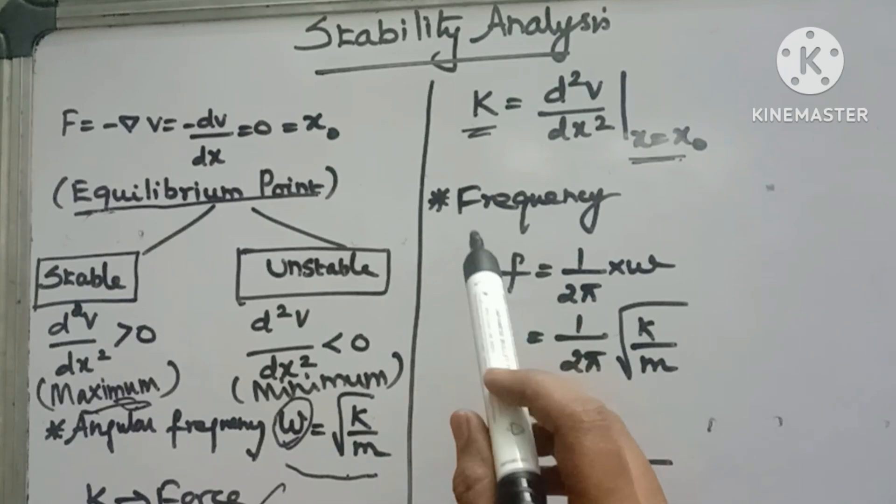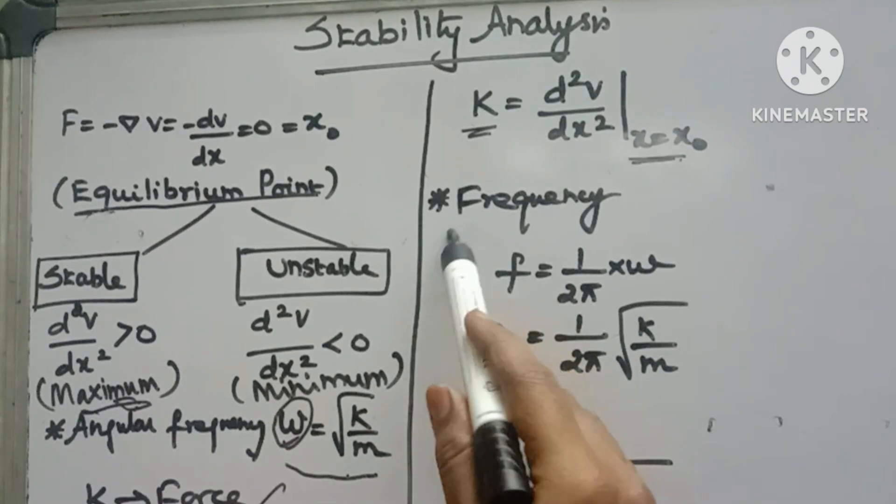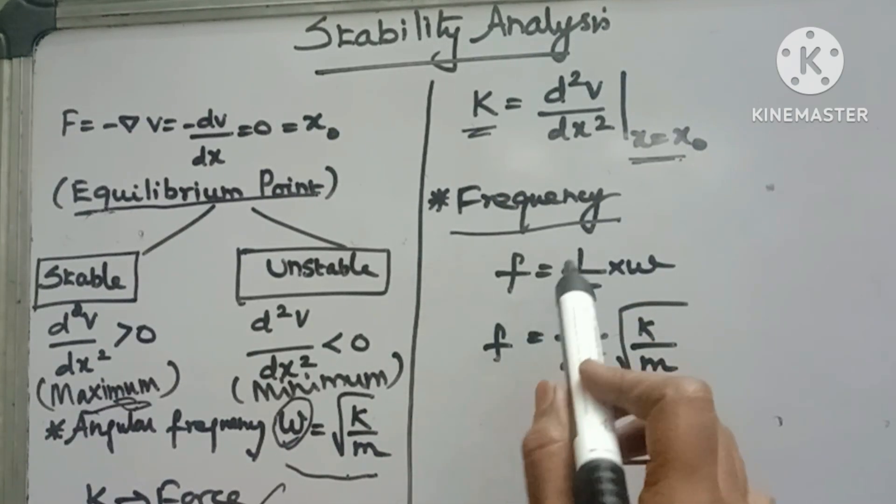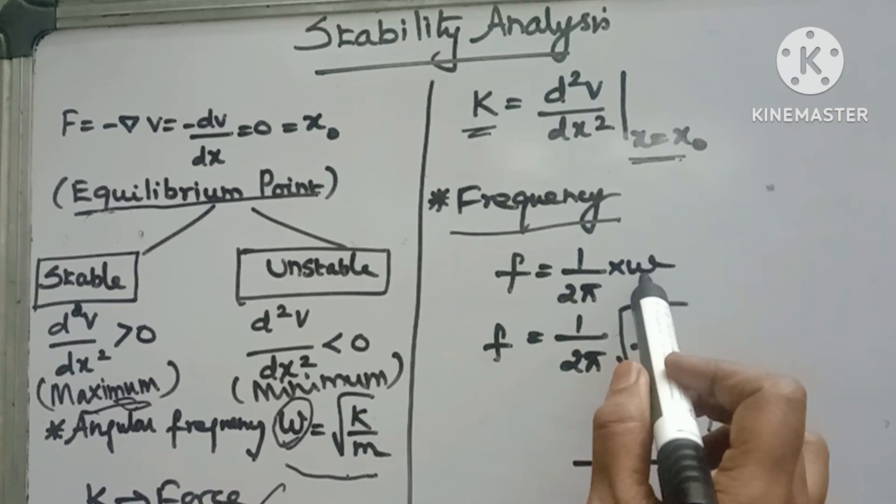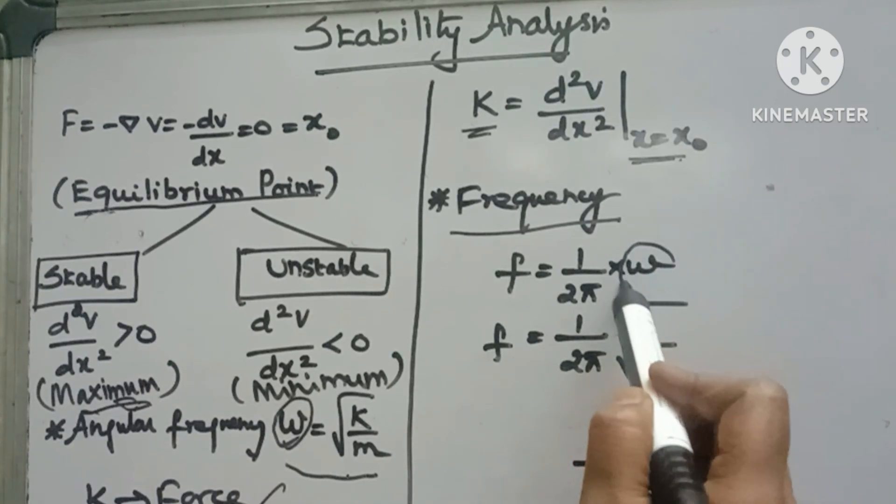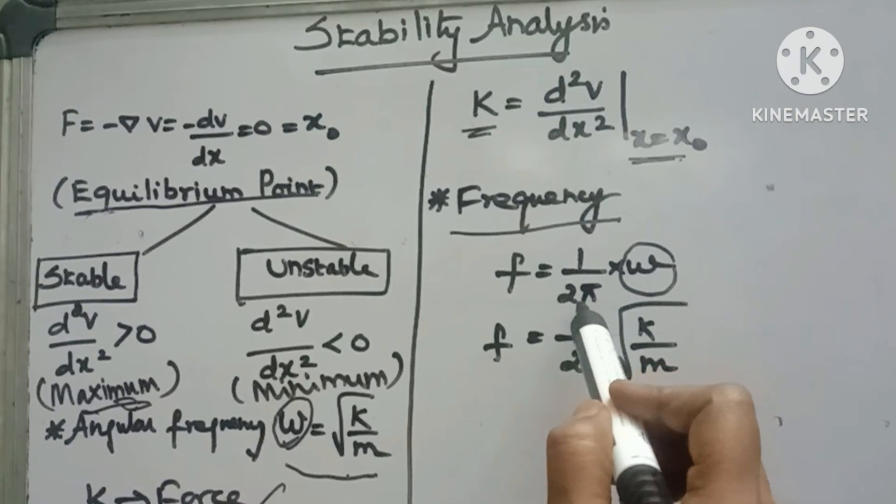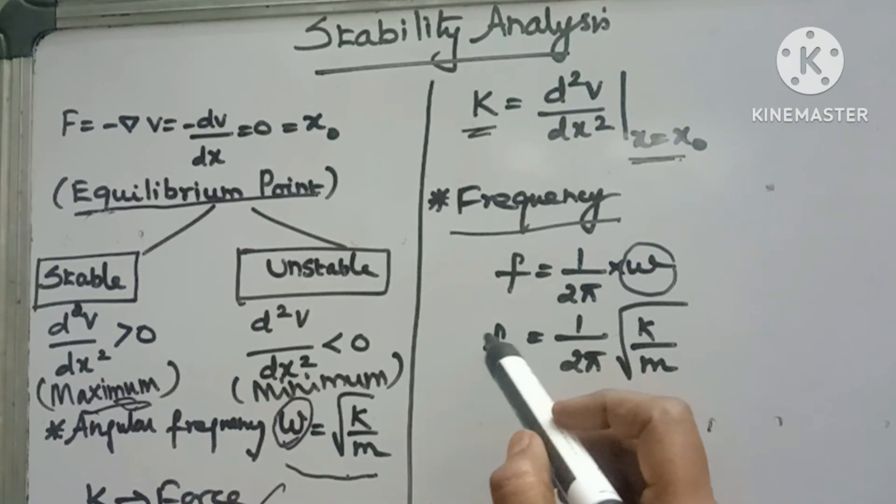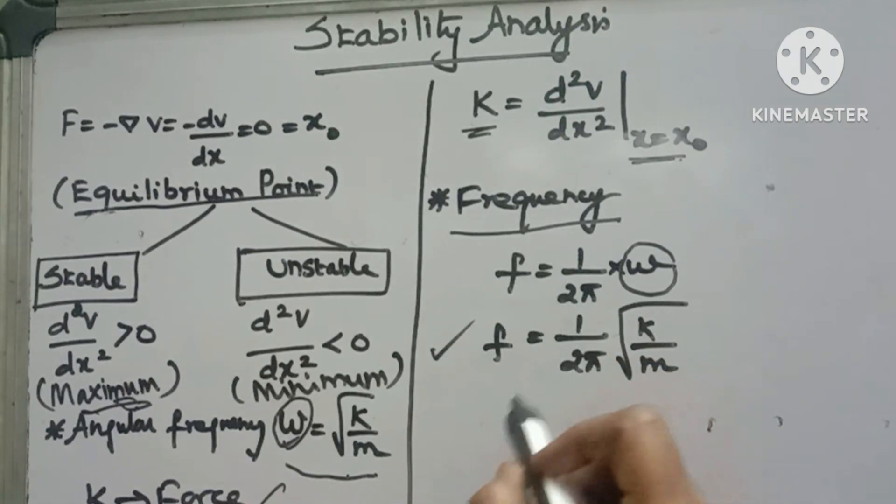Also, we can find the frequency using the formula f = 1/(2π) × ω, where ω is the angular frequency. That term times 1/(2π) is the frequency. If we substitute ω, we get f = 1/(2π)√(k/m). This is basic stability analysis.